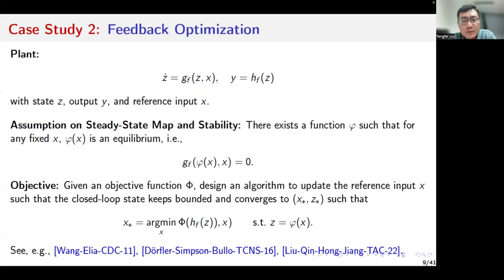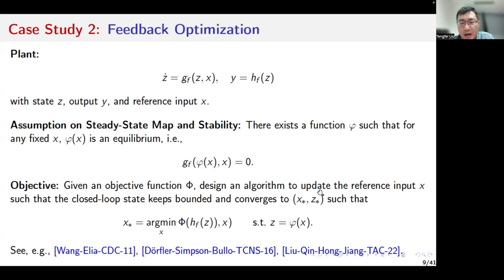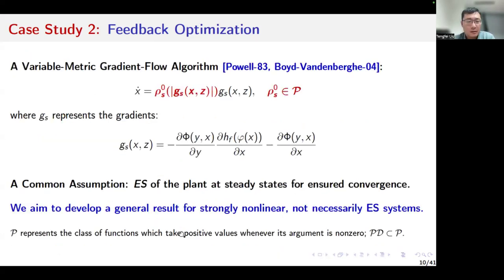Another example is about feedback optimization. We still consider the plant in the same form as in the integral control example. We still make assumptions on the steady state map of the plant and the asymptotic stability property of the equilibrium when the reference input x is fixed. But the objective is to design an algorithm to update the reference input x so that the closed-loop system state keeps bounded and converges to some point that solves the optimization problem, where phi is an objective function. It is still a common assumption that the plant should be exponentially stable at steady states for ensured convergence. We want to develop a more general result for strongly non-linear, not necessarily exponentially stable systems.